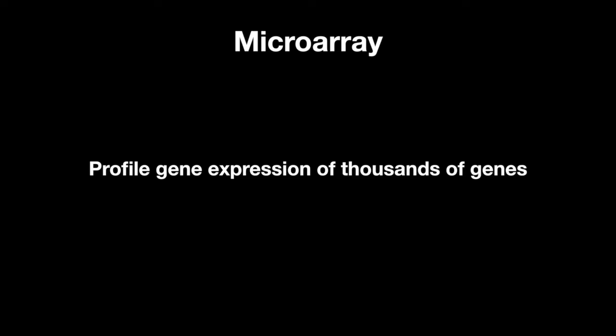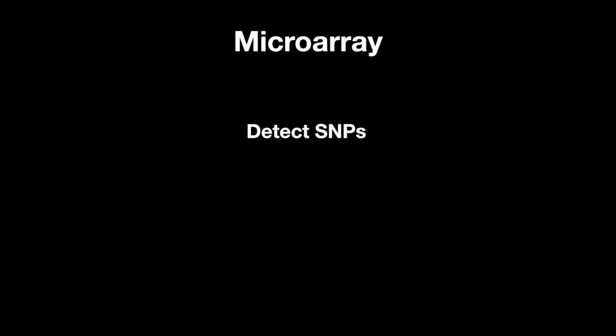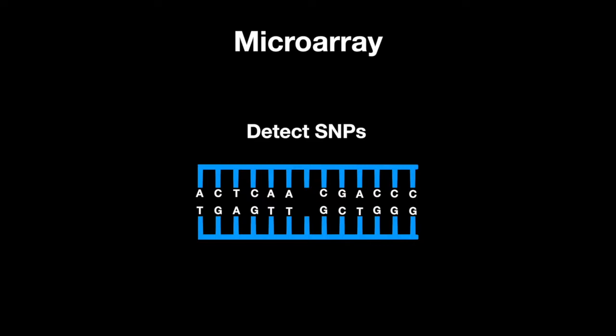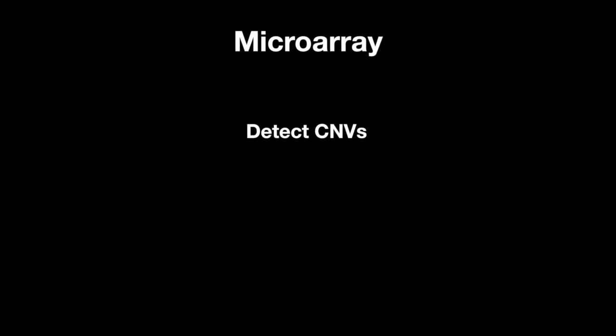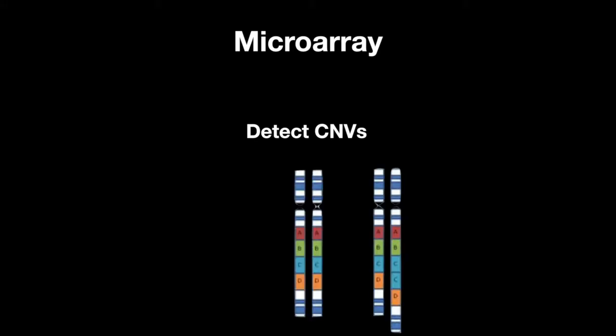A microarray is a technique that can quickly profile gene expression of thousands of genes extremely fast. It can detect single nucleotide polymorphisms, or SNPs, which is a change in a single nucleotide in DNA, and copy number variations, or CNVs, which are variations to the number of genes in each individual.